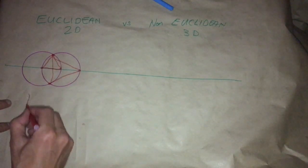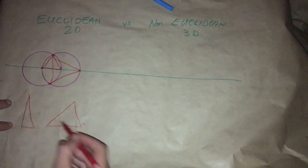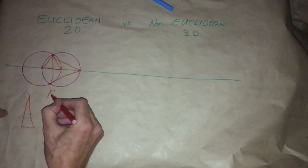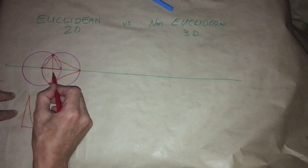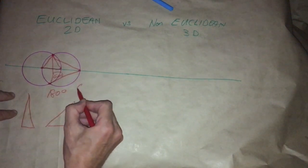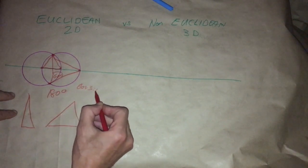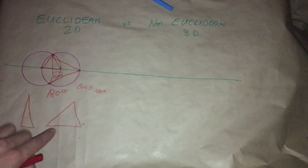Now it doesn't even have to be equilateral. Whatever triangle you draw, they're always going to add to 180 degrees. But an equilateral triangle is 60 degrees, so 60 times 3 is 180 degrees. You're always going to get 180 degrees on any two-dimensional Euclidean triangle.